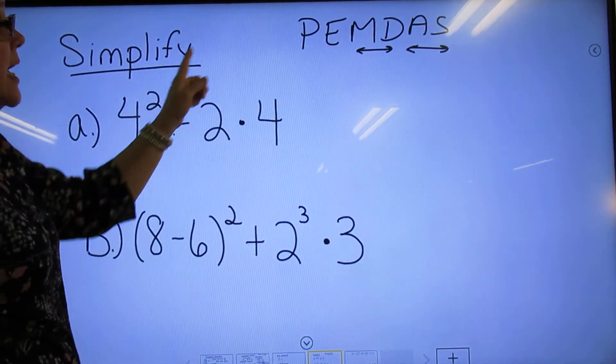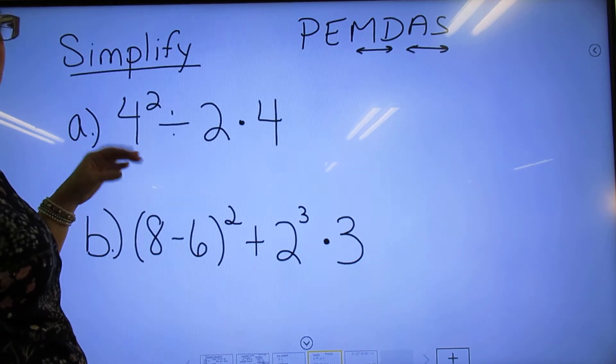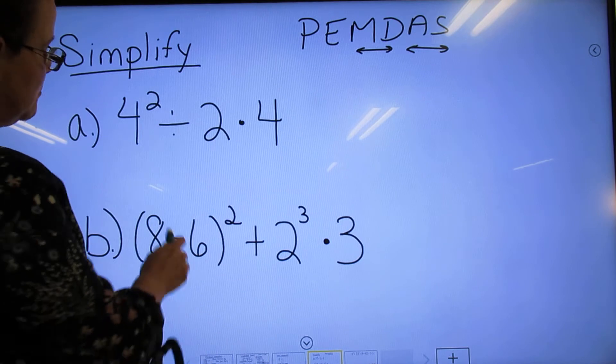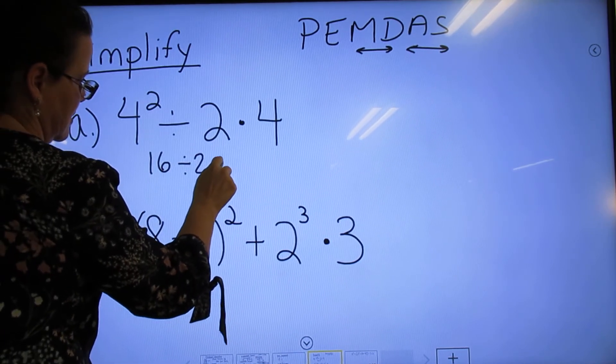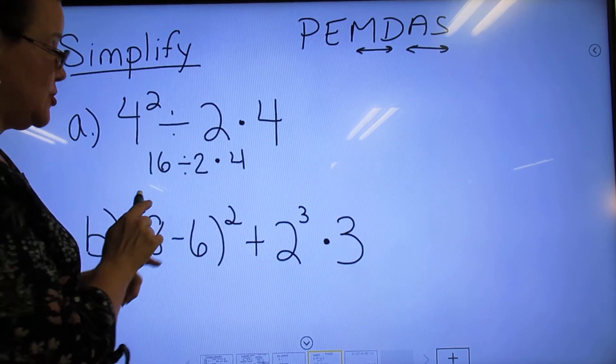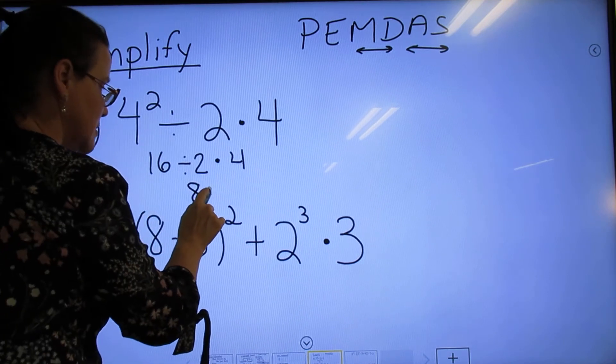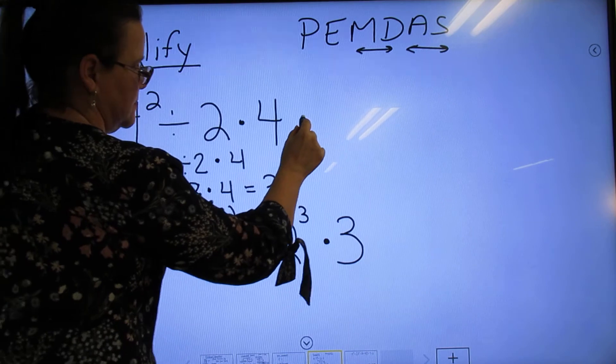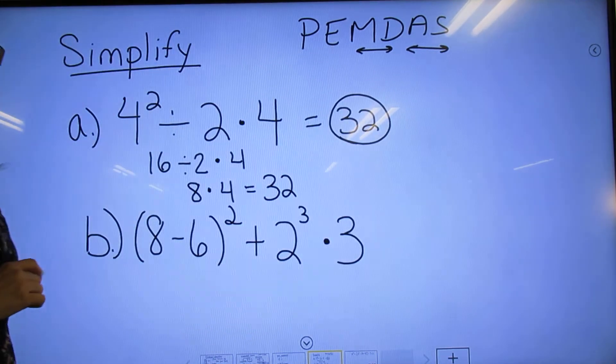Parentheses? No parentheses. Exponents? Yep, first one up: 4 squared. 4×4 tells you to multiply that twice. 4×4 would be 16. Then go left to right. 16÷2 is 8. 8×4 is 32. And that's how you would do that problem.